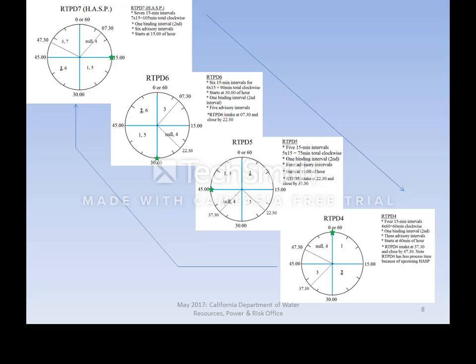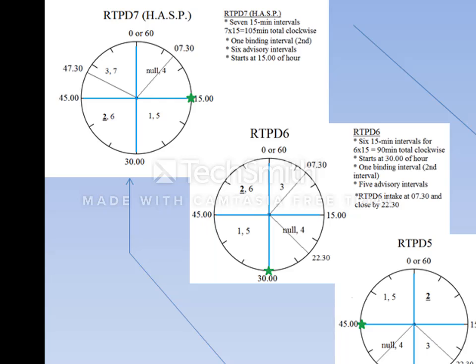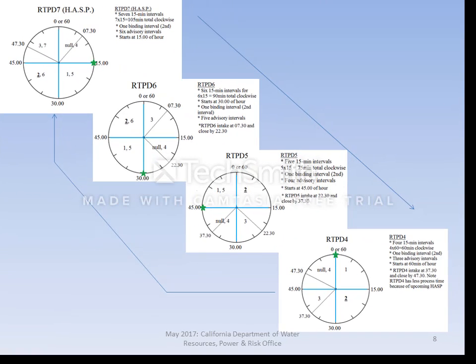Now for the remaining predispatch applications: PD6, PD5, and PD4 are also embedded in the RTUC application. Similar to HASP or PD7, the second 15-minute interval of each is binding. PD6 is very similar to PD7 except it doesn't consider hourly block bids and interties. PD6 follows approximately the same timeline each hour. It samples inputs at the 7:30 mark of the hour, performs iterative computation, and publishes its unit commitment decision as six 15-minute market results no later than the 22:30 mark, made available to generation units through ADS and globally through OASIS.